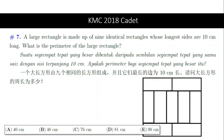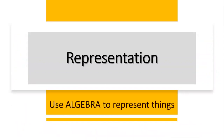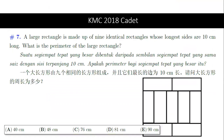Now we are going to use one of the most important problem-solving techniques in maths, which is representation. The method of representation means we are going to use algebra to represent things so that it is easier for us to construct an equation. Back to the question — we can label the shorter side of the rectangle as A, and the longer side as B.